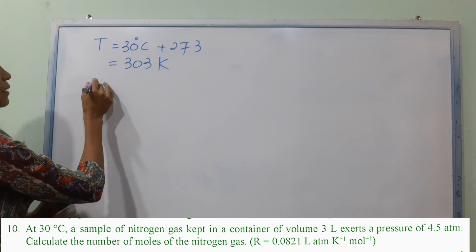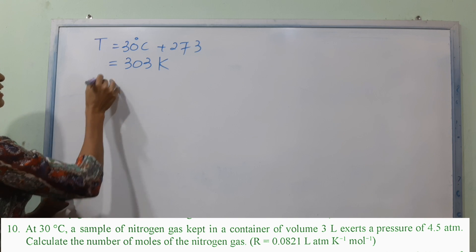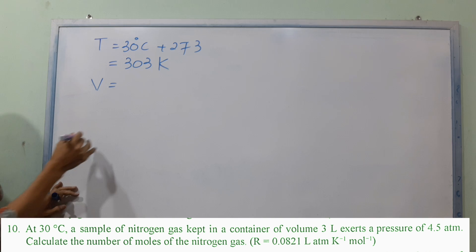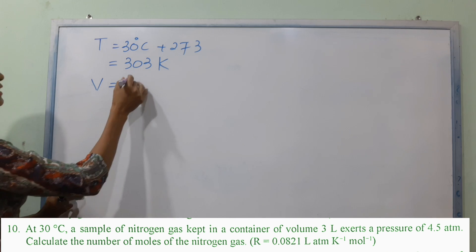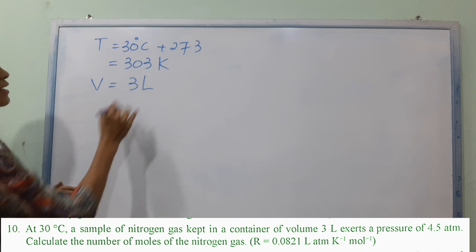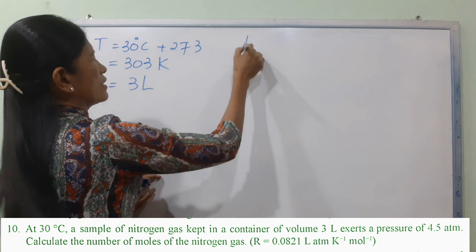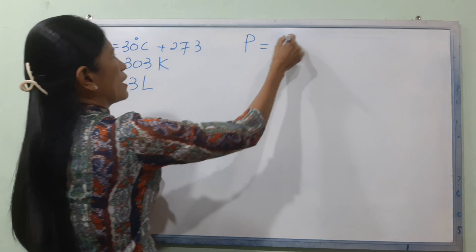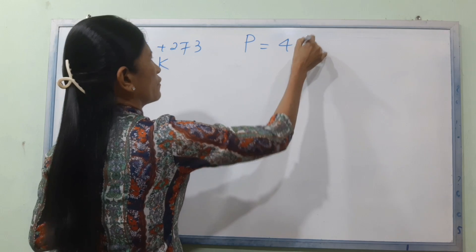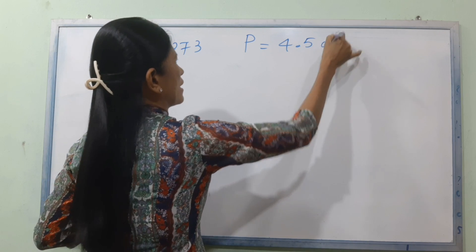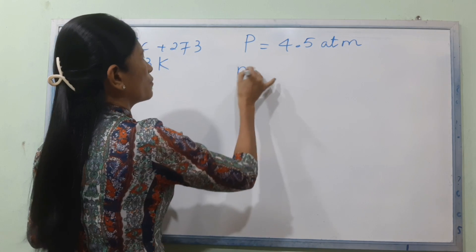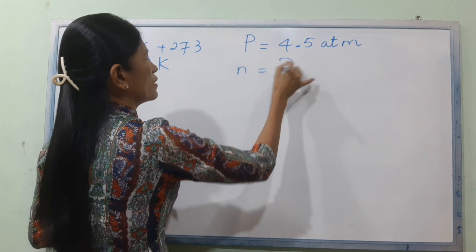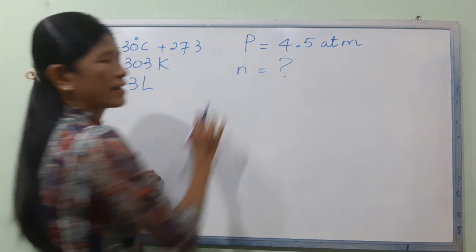Now we can put the nitrogen gas volume as V. The nitrogen gas volume is 3 liters. P is 4.580 atm. We can use the ideal gas law for nitrogen gas.